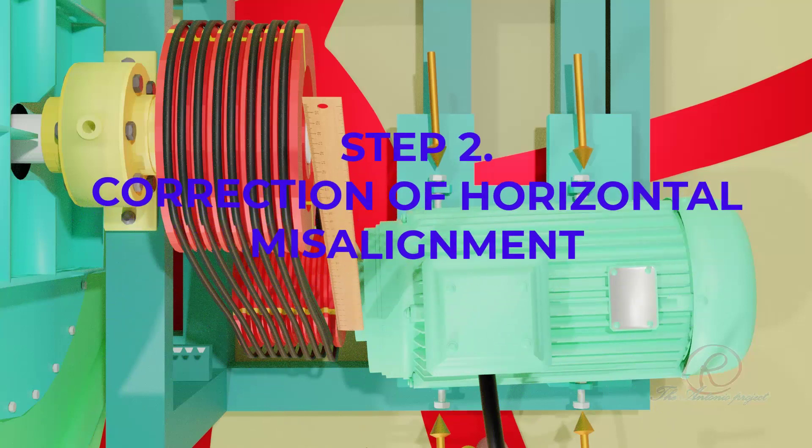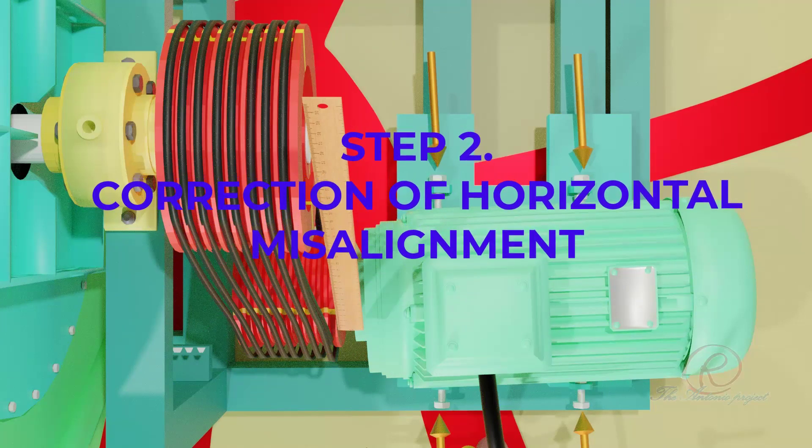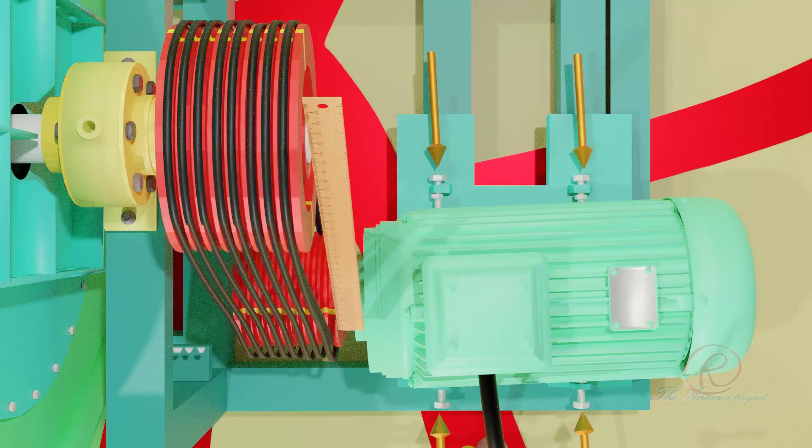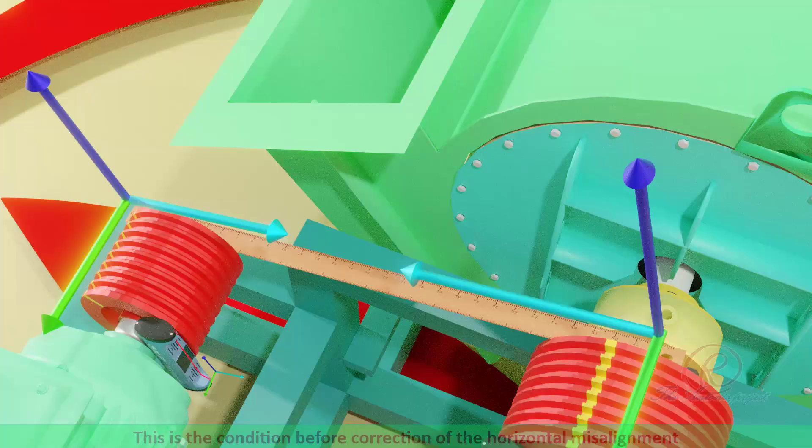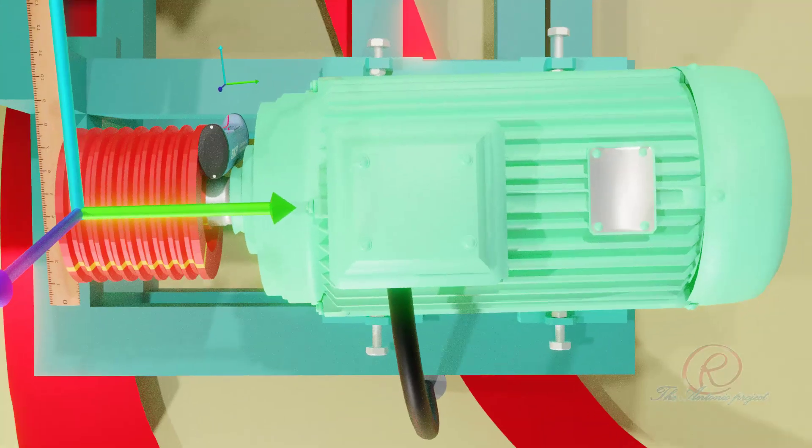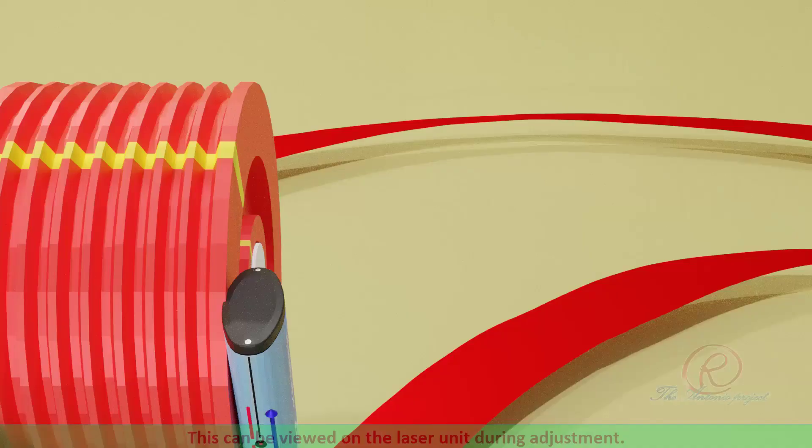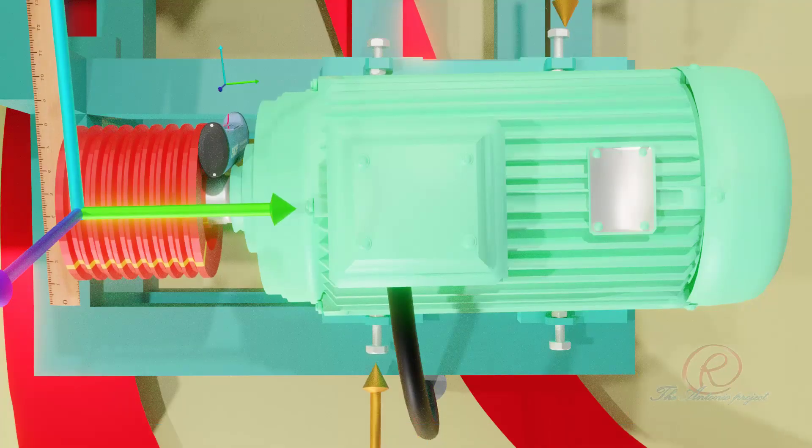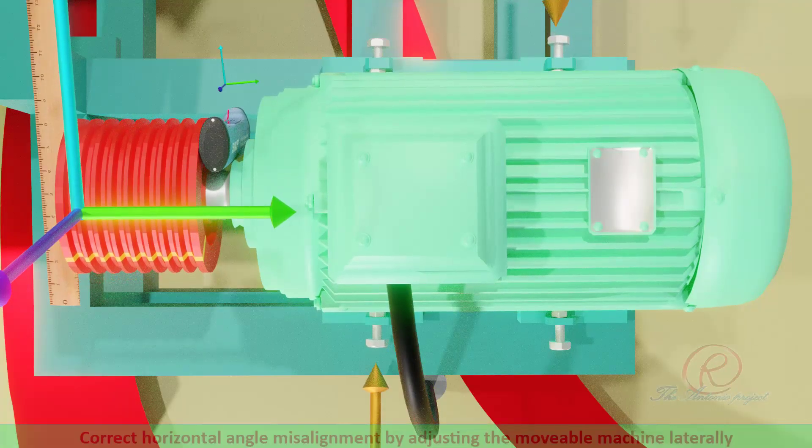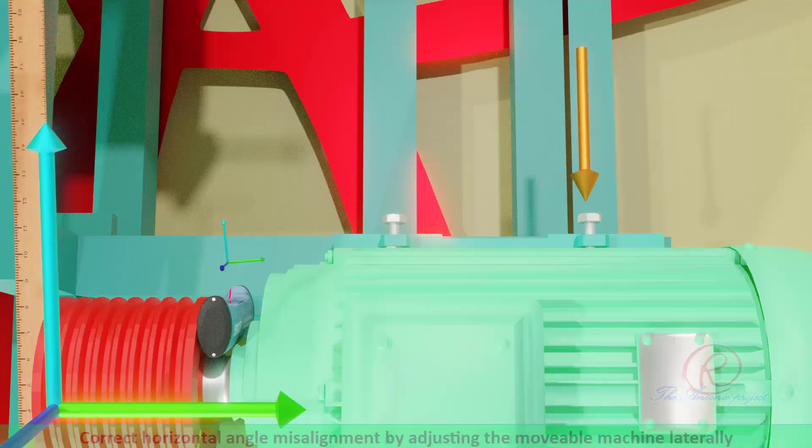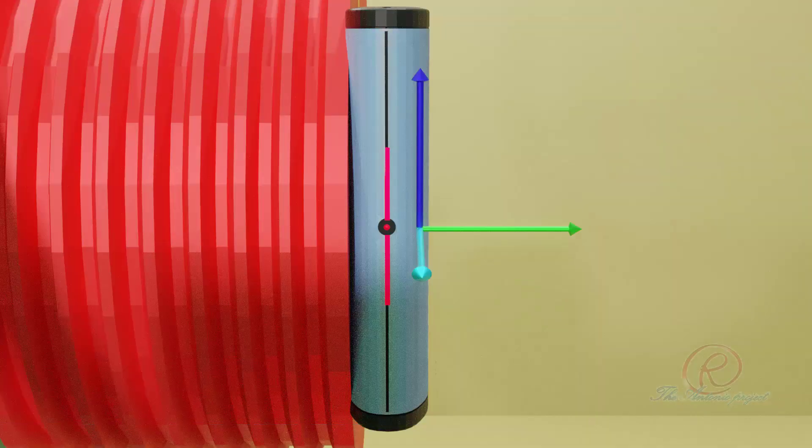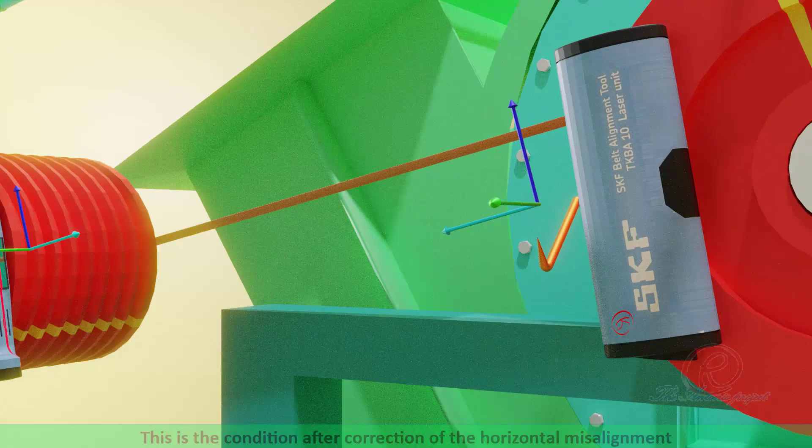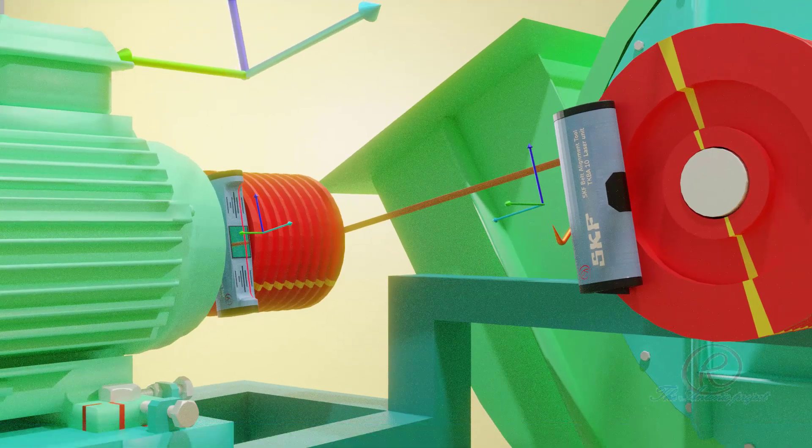Step 2, correction of horizontal misalignment. This is the condition before correction of the horizontal misalignment. This can be viewed on the laser unit during adjustment. Correct horizontal angle misalignment by adjusting the moveable machine laterally. This is the condition after correction of the horizontal misalignment.